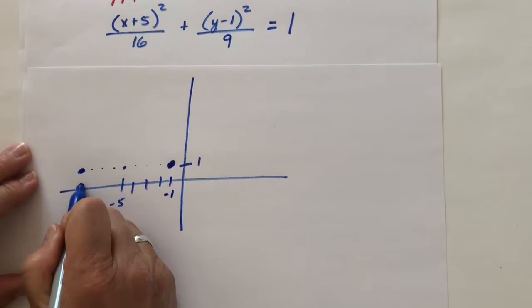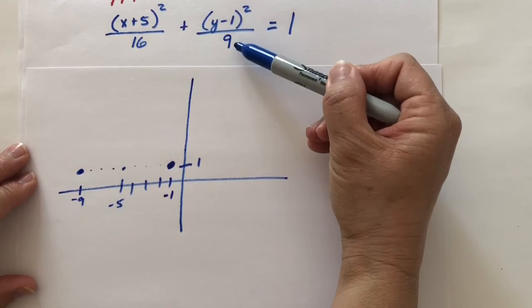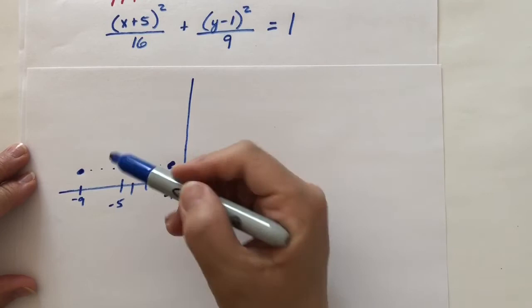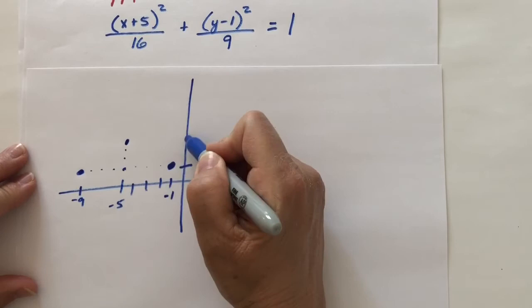I look under the y to see how far to go in the y direction. Take the square root of this number. That's 3. So from here, I go up 3. 1, 2, 3. So I would be up here at 4.